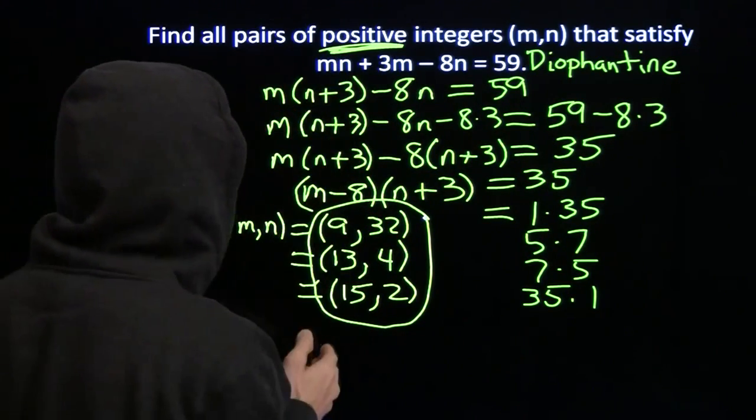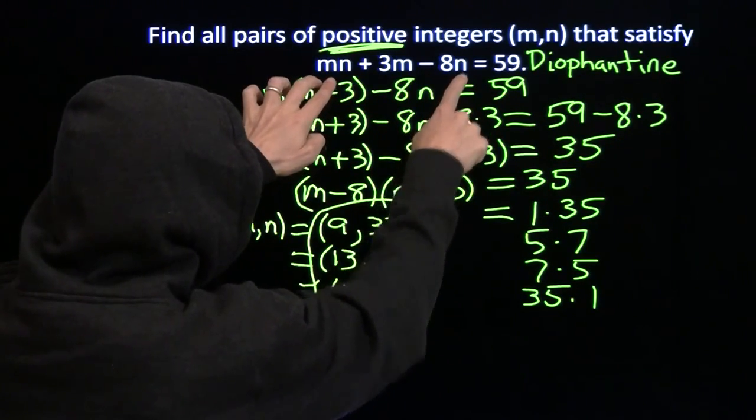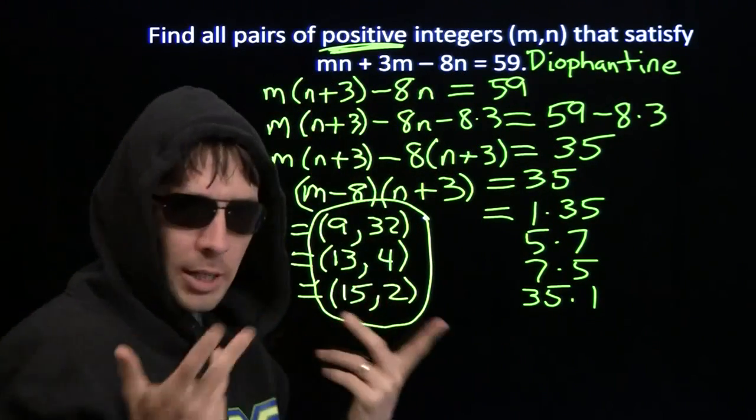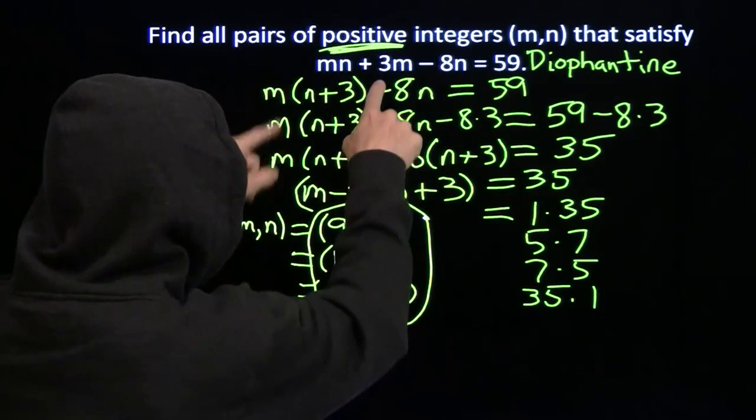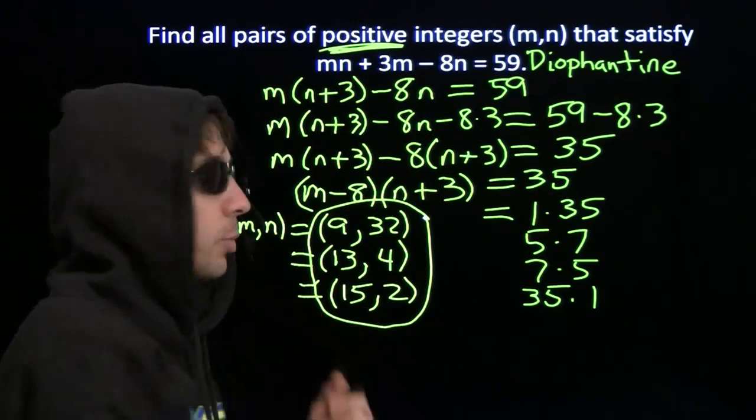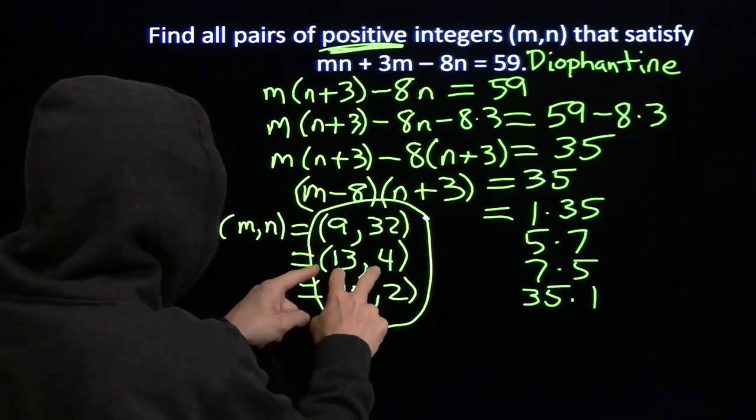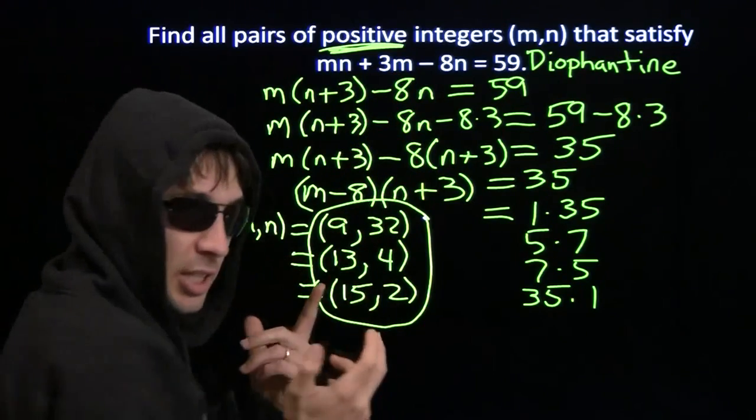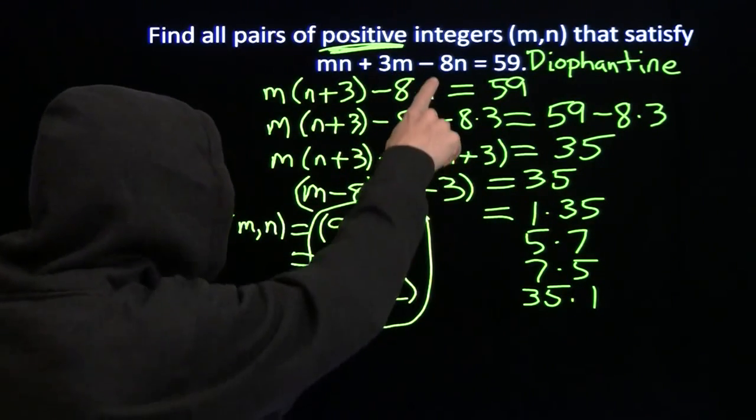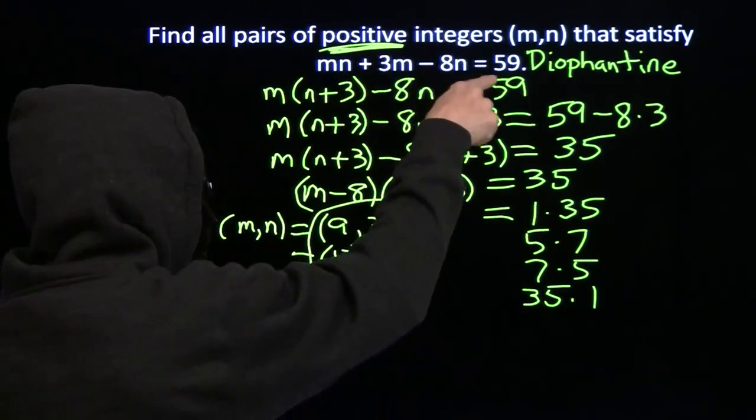Stick in 9, 32 in there. 9 times 32, or we're going to have a minus 8 times 32 over there, and we put n equals 32 in there. So 9 times 32 minus 8 times 32, that's just going to leave 32. Plus 3 times 9 is 27. 32 plus 27, 59. Let's try this one. 13 times 4 gives us 52. Plus 3 times 13 is 39. 52 plus 39 gives us 91. Minus 8 times 4, 91 minus 32, 59.